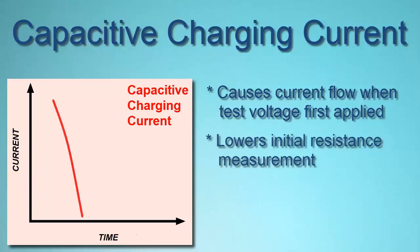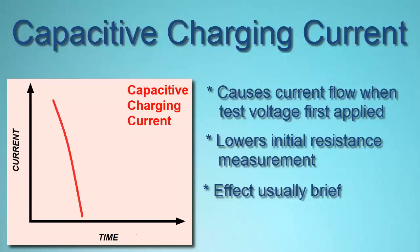This effect is usually brief, often lasting less than a second, although in very long cables or large motors, this can last much longer, up to 30 minutes or more. Capacitive charging current is not an indicator of insulation quality, but it needs to be accounted for to assure your measurement is meaningful and relevant.